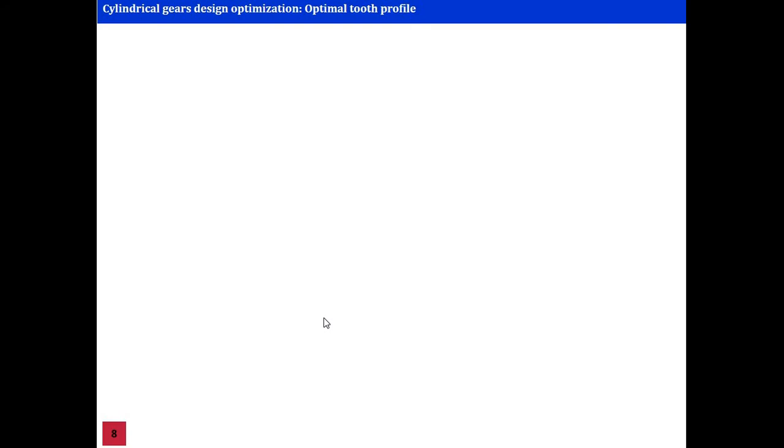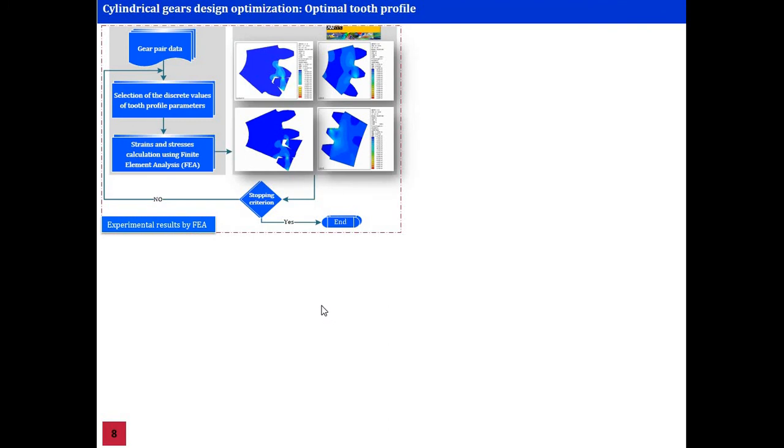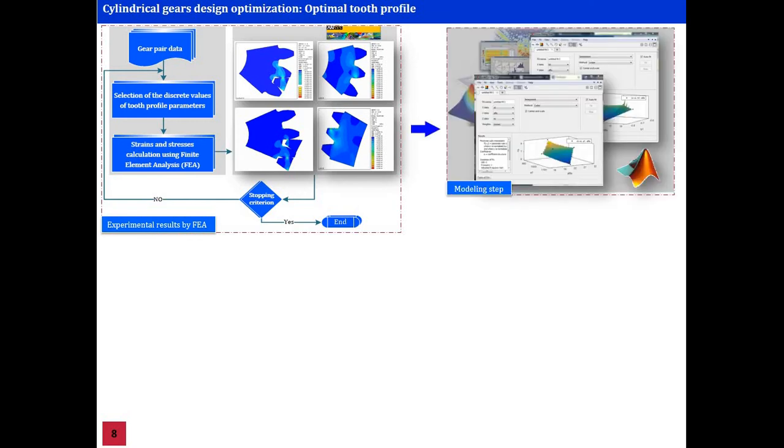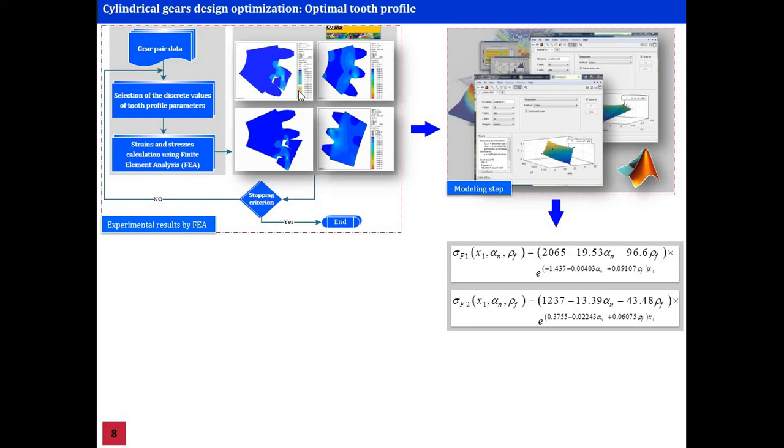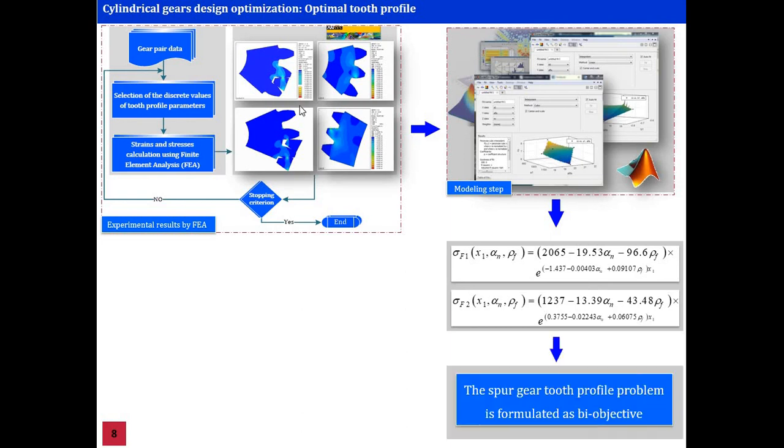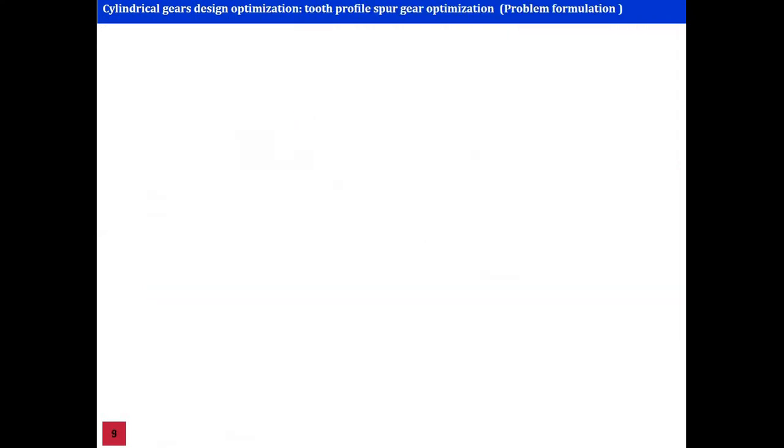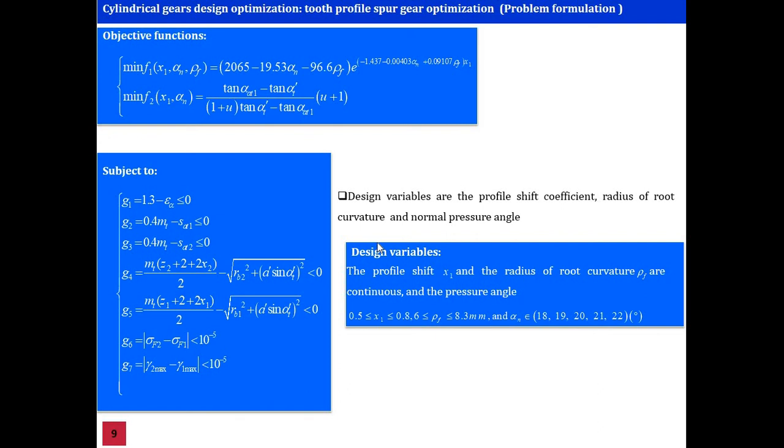As a case study, a cylindrical spur gear in a large transport machine is taken. The problem is formulated for two objectives regarding the maximum bending stress and the specific sliding coefficients. The optimization-dependent bending stresses is modeled explicitly using finite element analysis. In addition, several constraints are considered. The optimization problem is developed for three mixed variables, two continuous and one discrete.